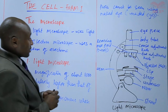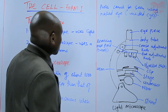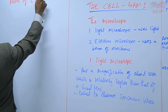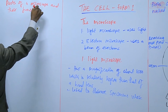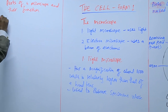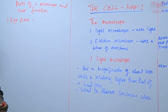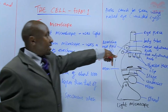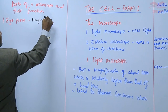Those are the main parts of a microscope. We are going to discuss the functions of those parts. Starting from the top, we have the eyepiece. The eyepiece is where we place the eye during observation and examination, and it magnifies the specimen — it is the first point of magnification.